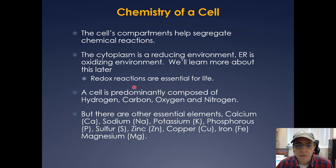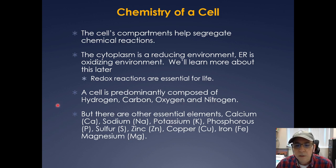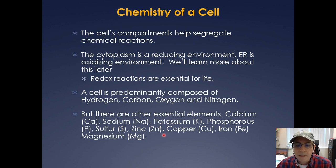When it comes to chemistry of the cell, the cell is predominantly composed of hydrogen, carbon, oxygen, and nitrogen, but there are also other essential elements like calcium, sodium, potassium, phosphorus, sulfur, zinc, copper, iron, and magnesium. You're all familiar with the sodium-potassium pump, and calcium is a small signaling molecule stored in the endoplasmic reticulum.